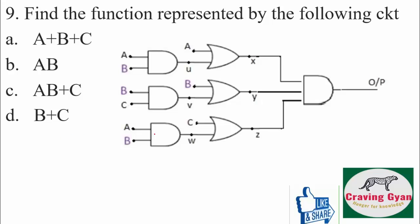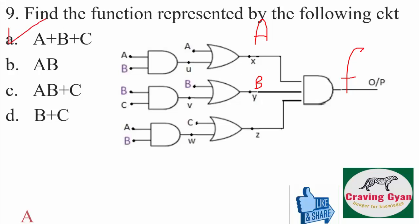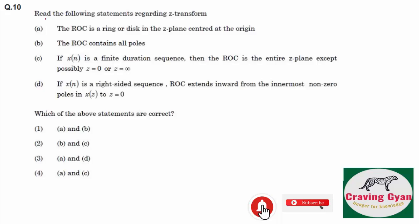Ninth question: find the functional equivalent at the output. At X you get A + AB = A; at Y you get B + BC = B; at Z you get C + AB. So at F you get A·B·(C + AB), which equals A + B + C, hence option number A is going to follow.